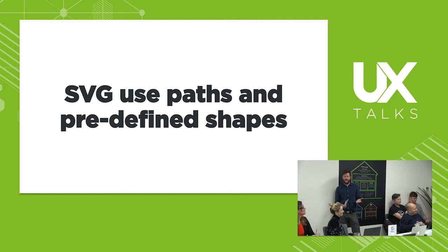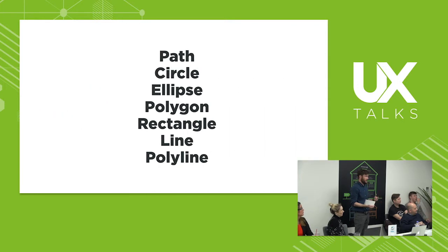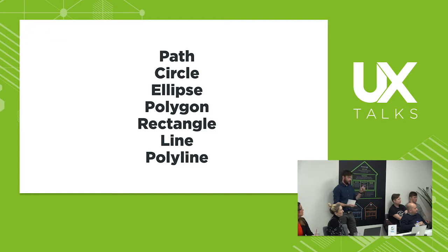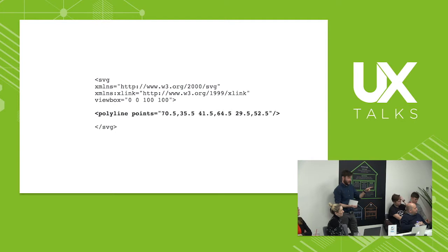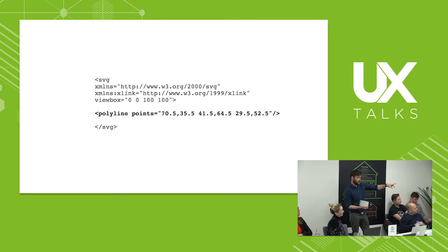We're going to use our MSM tick as an example. SVG uses paths and predefined shapes — path, circle — they're pretty self-explanatory. For this we're going to use a polyline, which means it's a single fragment that defines multiple lines within itself. So we'll put a polyline in. You'll see that the points are grouped in pairs — your X and Y coordinates within the viewBox of 100 by 100 that we've set.